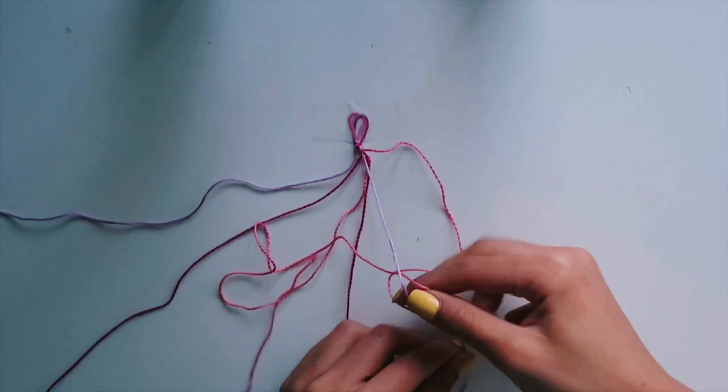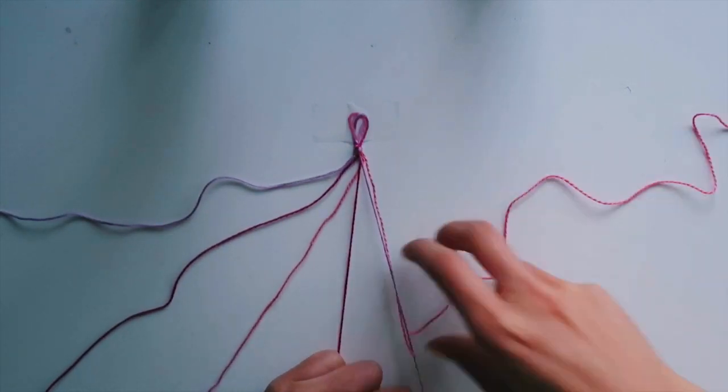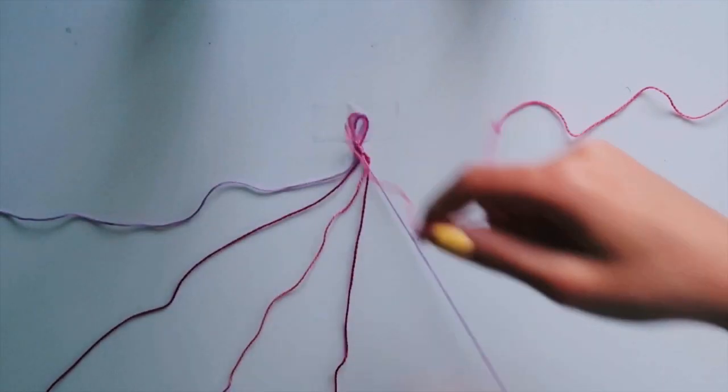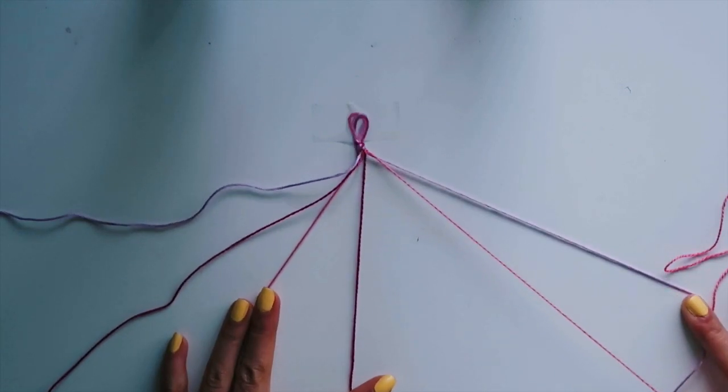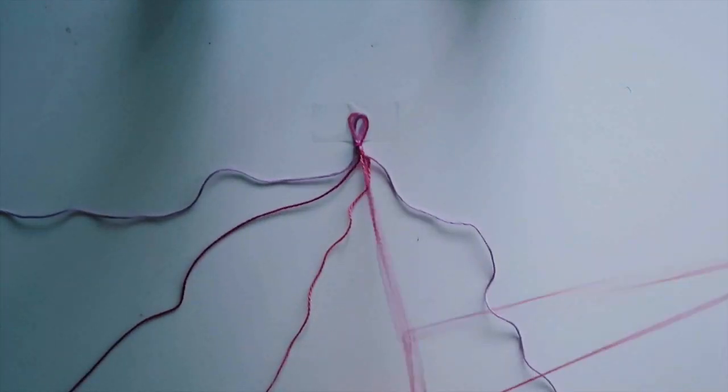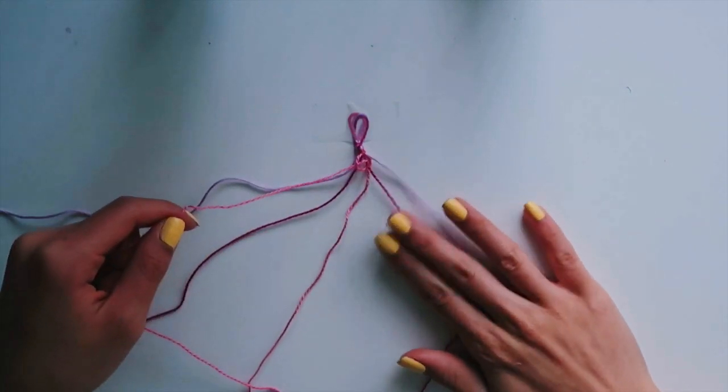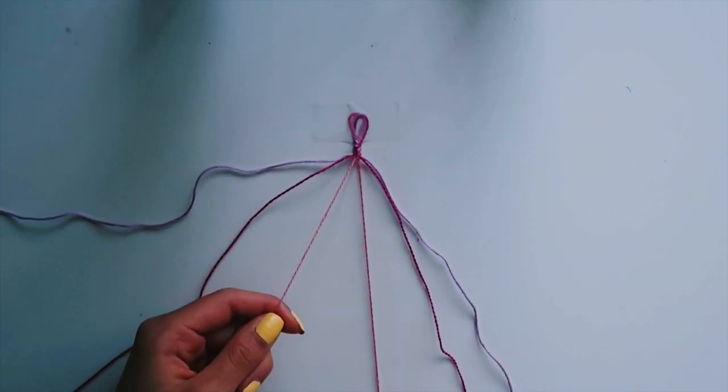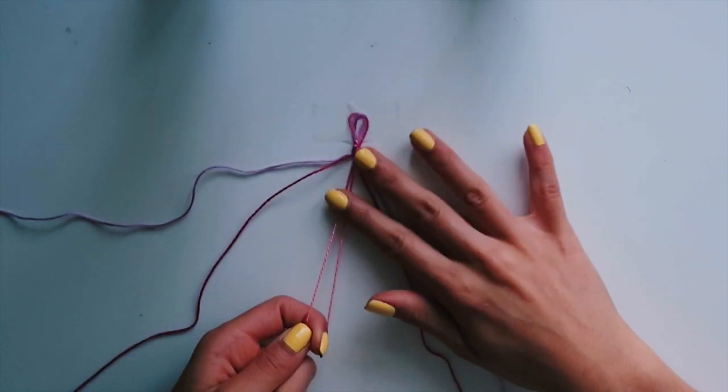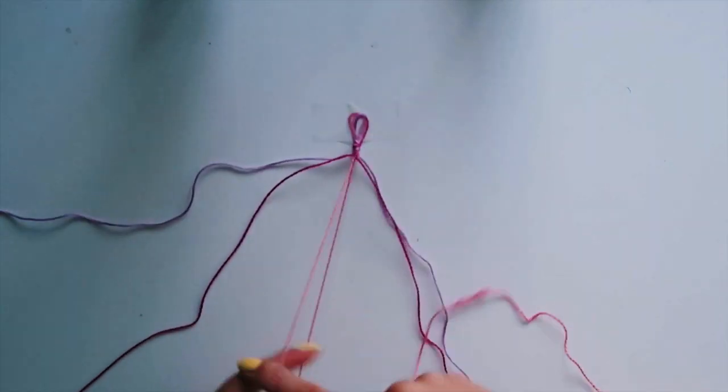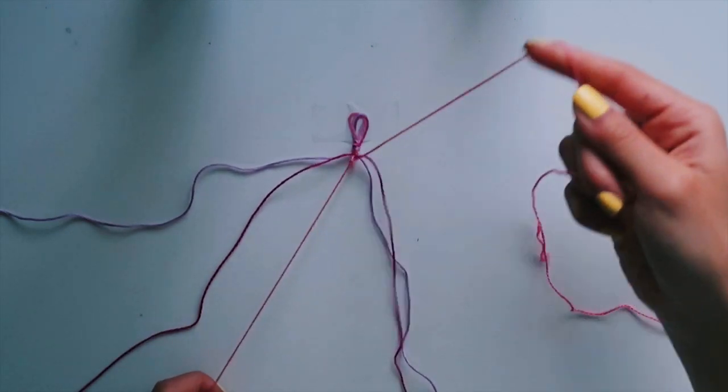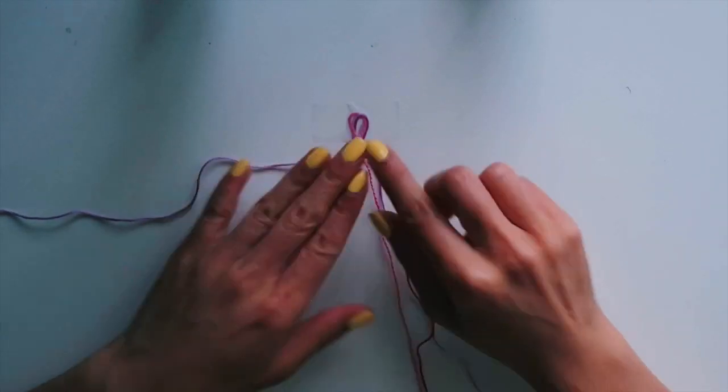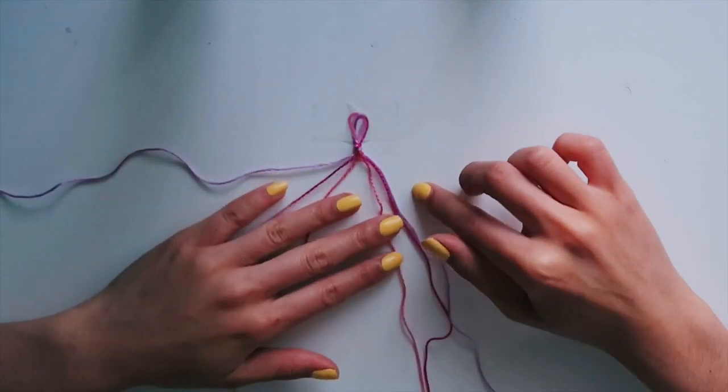So again, you're gonna be making a four like that and then bringing it under. And then once you've done that, you're gonna do the same thing on the next two strings. Two knots here. And then you're also gonna do two knots on the pink one just to make sure that it's tied together, if that makes sense.